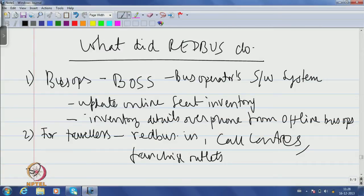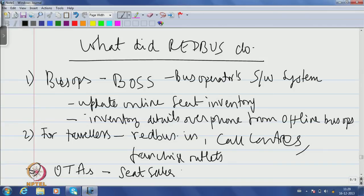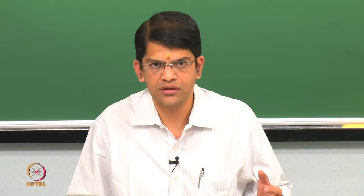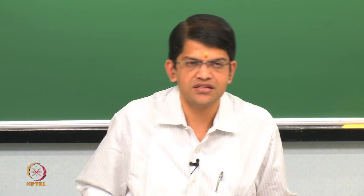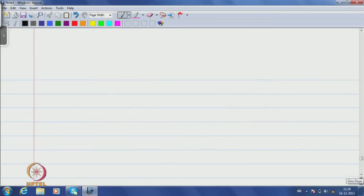The third thing they did was for OTAs — Online Travel Agents. There are passengers who buy air tickets, book hotels, and book cabs through OTAs. The major OTAs at that point were Expedia and Yatra.com. To these, Red Bus gave a separate application called a Seat Seller application, loaded into the OTA's website as an additional module in their online portal, so that OTAs themselves could book bus tickets using the Seat Seller application as part of their tool package.